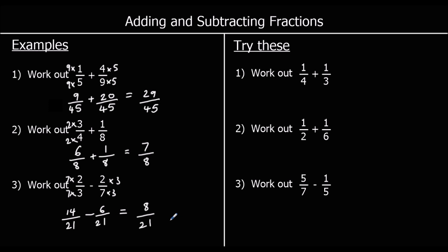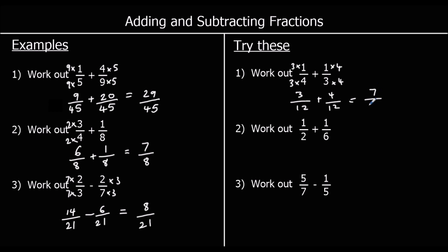Now three for you to try. Question one: work out one-quarter plus one-third. We need to make the bottom numbers the same, multiplying top and bottom of a quarter by three, and top and bottom of a third by four. So we'll have three-twelfths plus four-twelfths, which is seven-twelfths.